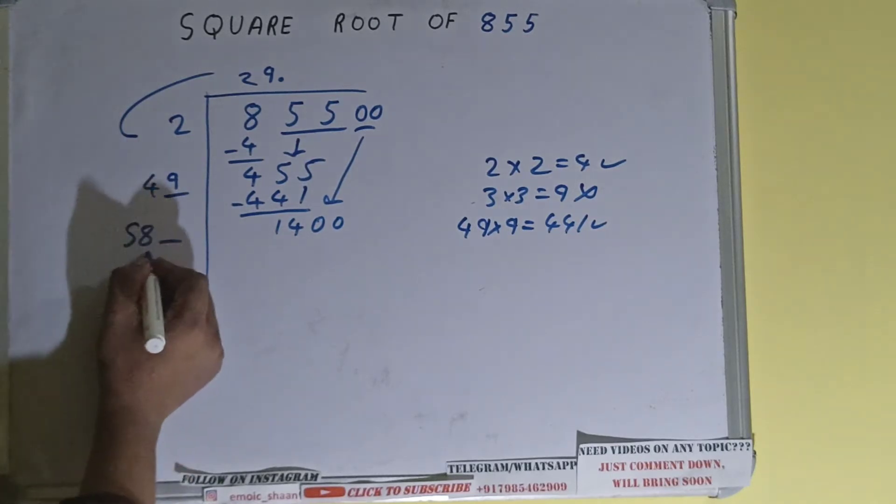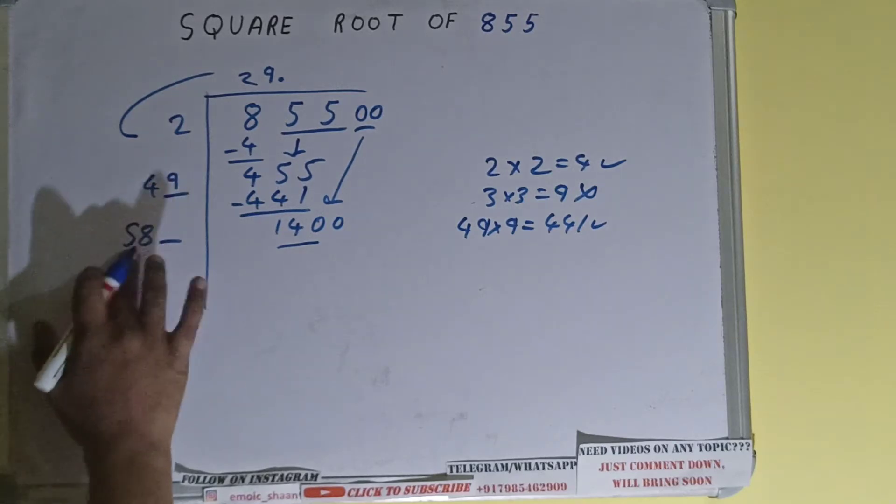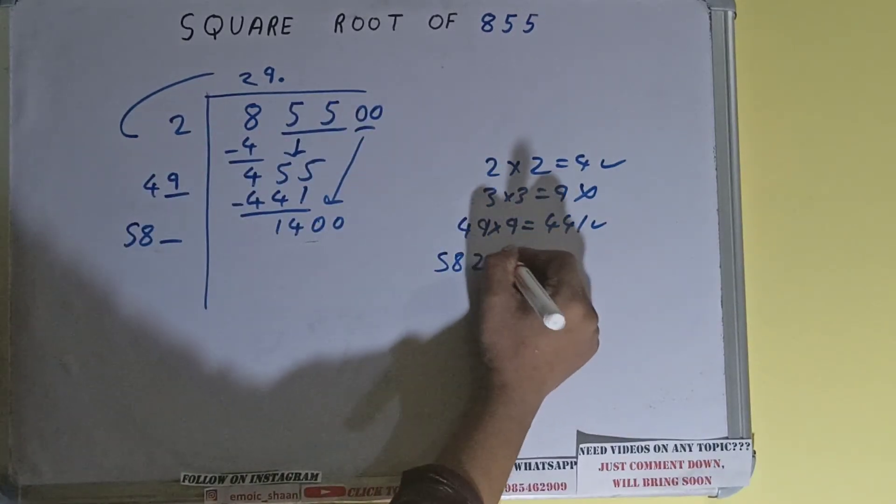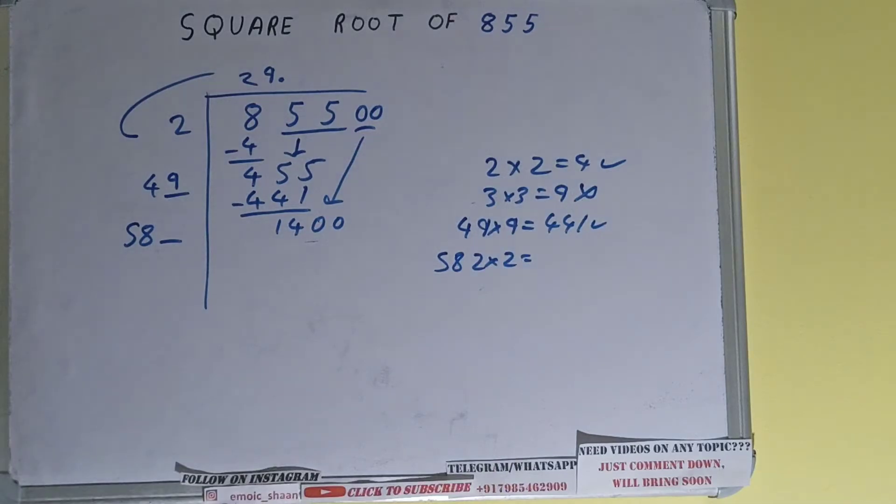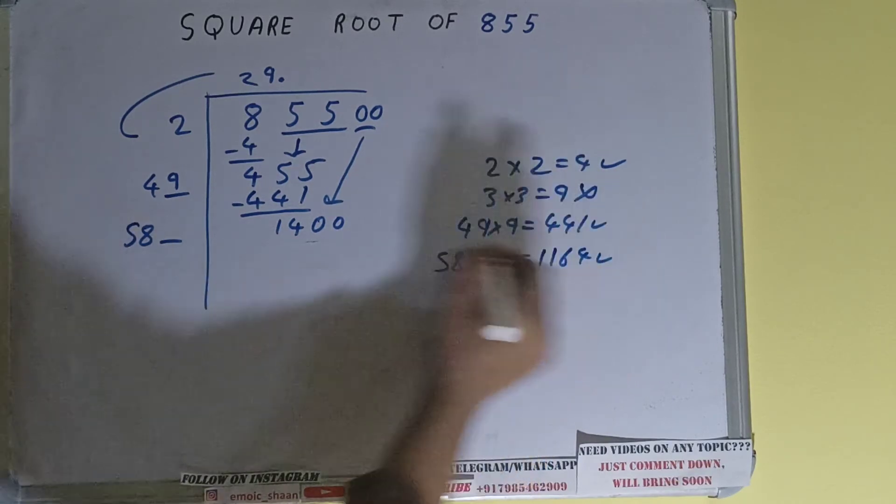Now we can compare this 58 with this 140. So 58 three times is 174 which is bigger, so we have to try 2 times. So 582 into 2 we can try, it will be 1164 and that is good to take.